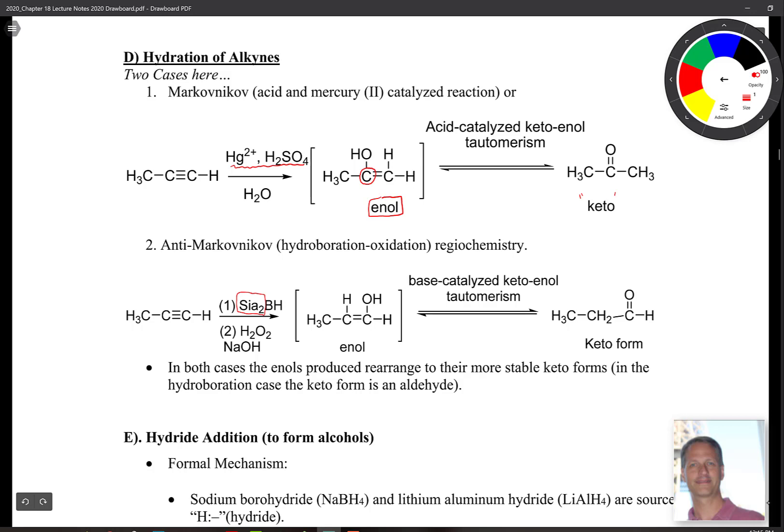The enols, if you recall, are typically unstable. So we usually would write the keto form for this. That gives you the Markovnikov addition because the carbon here at the end with more H's gets more H's. So the rich get richer is another way of looking at that Markovnikov addition.